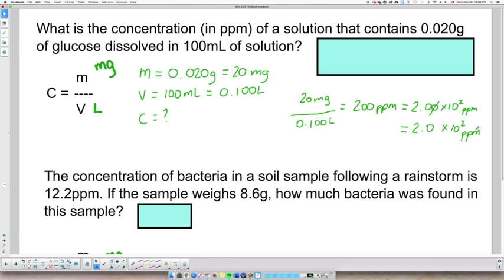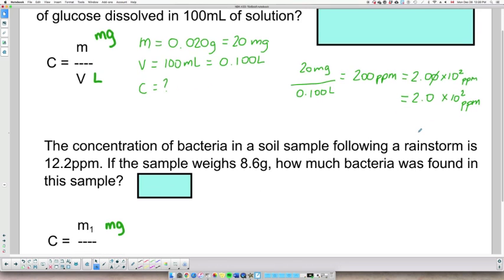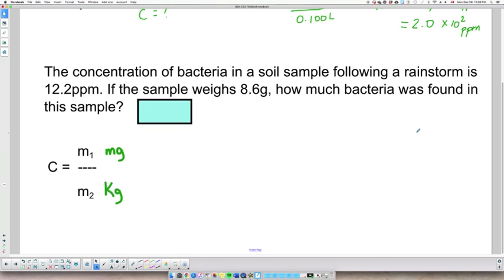All right, so that's for the first example. Moving on to the second one. So the concentration of bacteria in a soil sample following a rainstorm is 12 ppm. So in this case, they are giving me the concentration right away, 12.2 ppm.